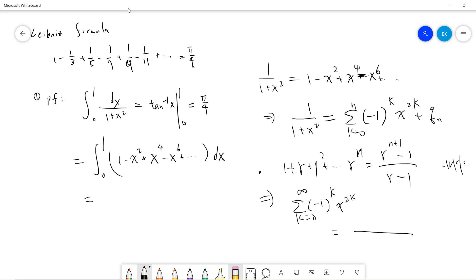In our case, r is -x². Using the formula with 1 - r in the denominator, where r equals -x².